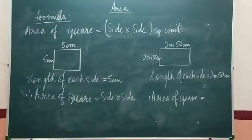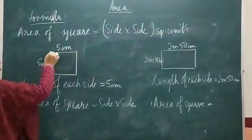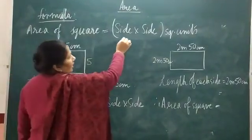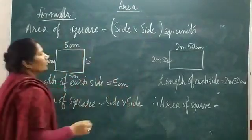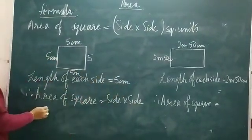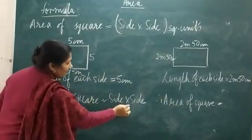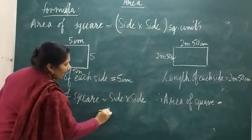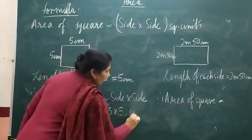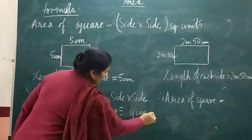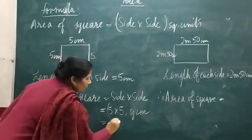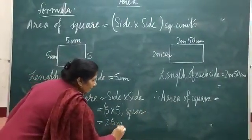Now area of a square. As you know, a square has all sides equal — say all sides are 5 centimeters. The formula is side multiplied by side, in square units. So 5 multiplied by 5 equals 25 centimeter square.